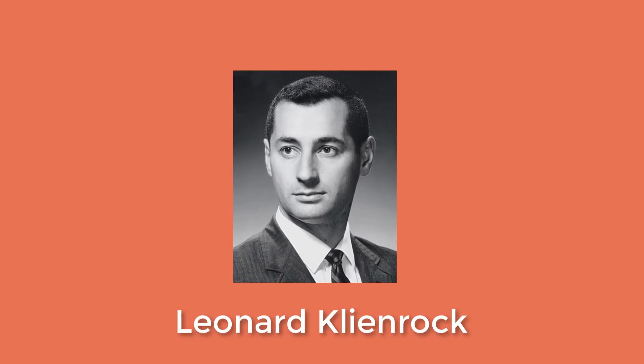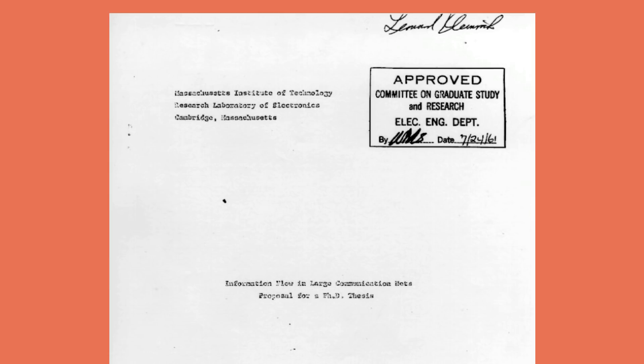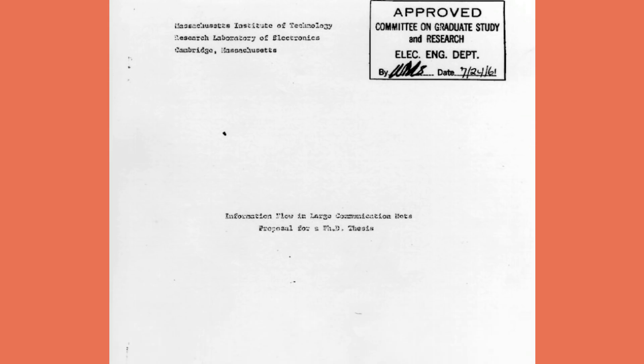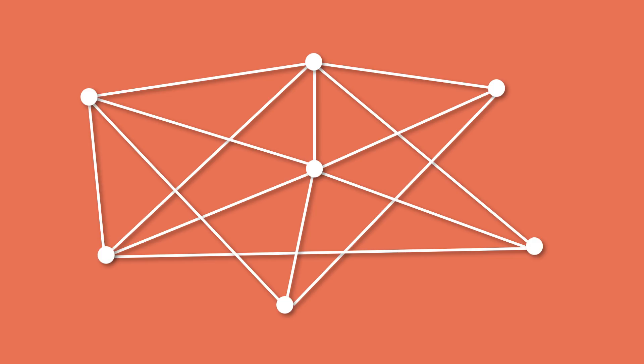The initial seed for the idea came from Leonard Kleinrock's paper, "Information Flow in Large Communication Net," published on May 31st of 1961. In it, he talked about transferring information on a communication net where nodes that can connect to each other could receive, sort, store, and transmit messages.